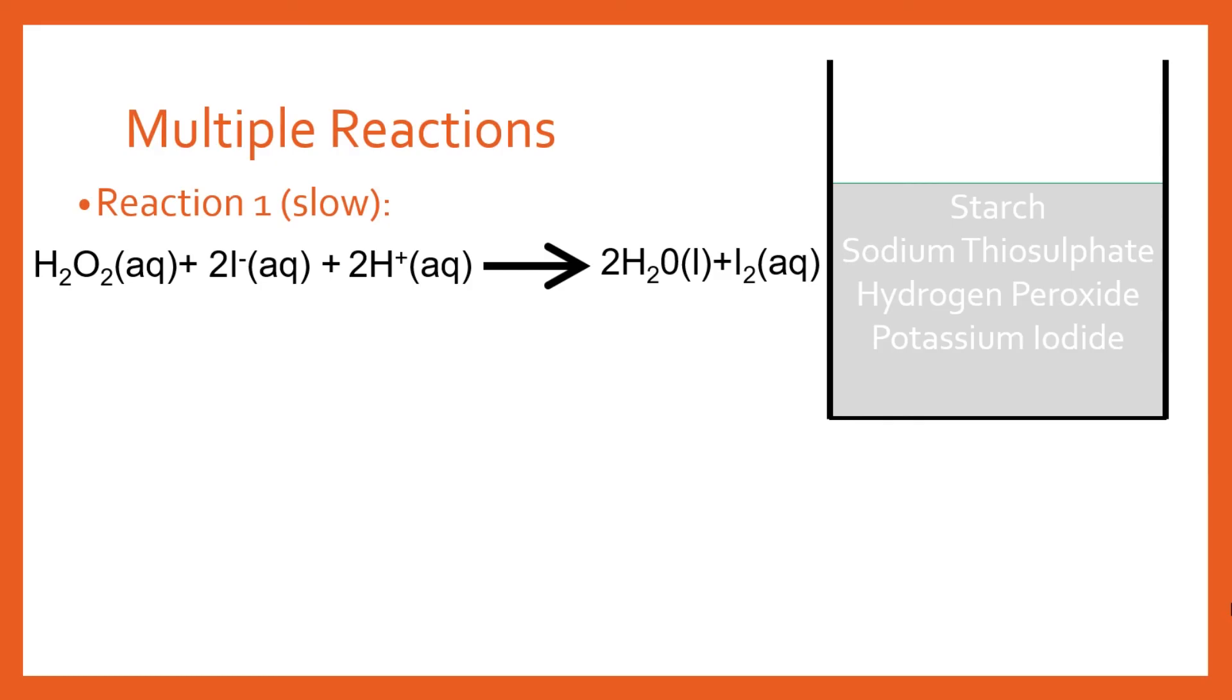So your iodine is going to build up and when that happens that's when you get reaction 3 happening. So the starch and the iodine is going to react and then you're getting the solution turning that black color very suddenly.